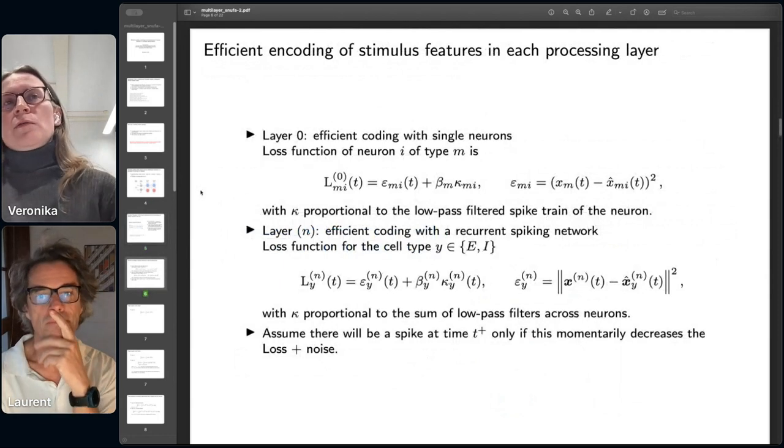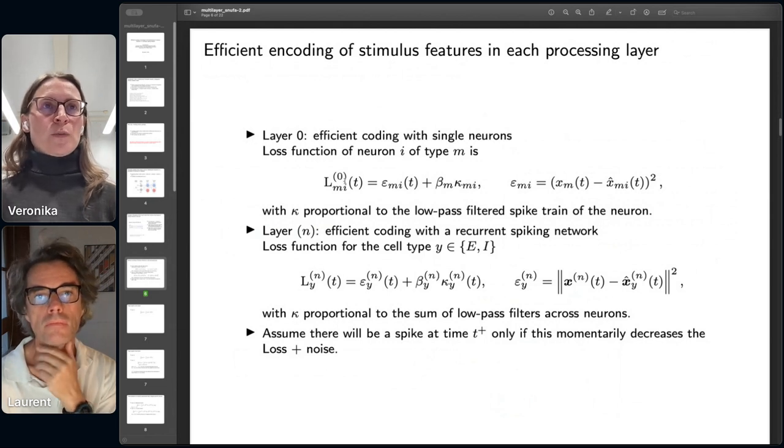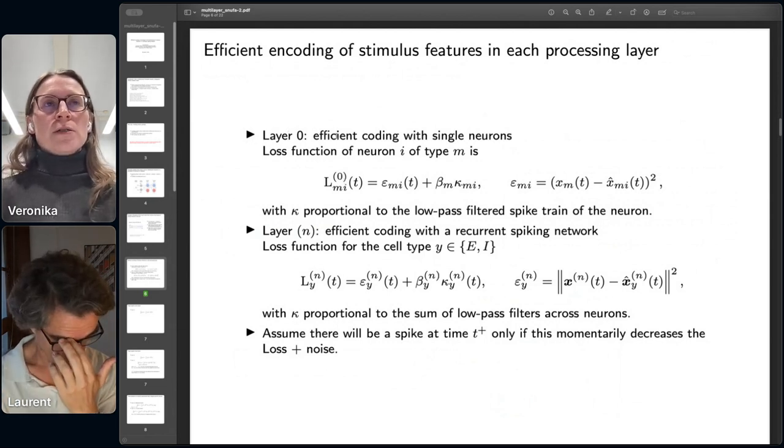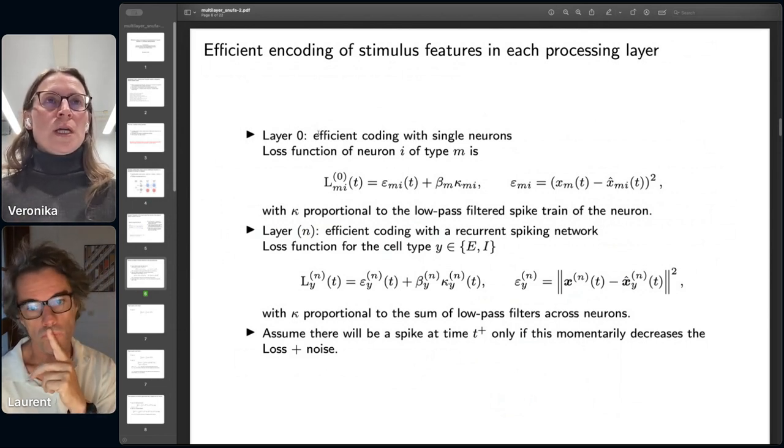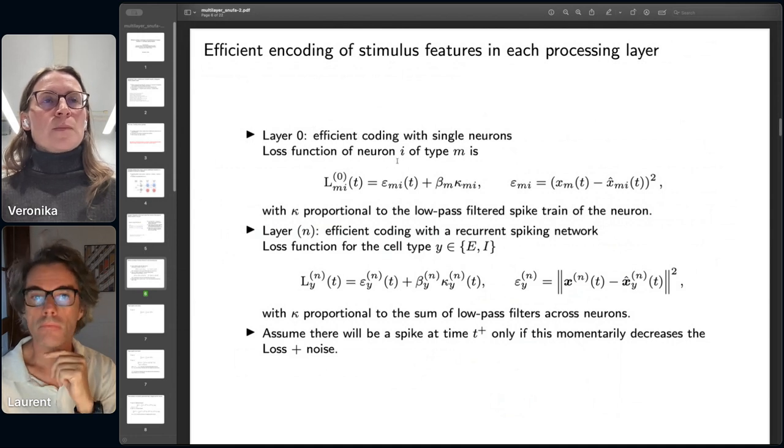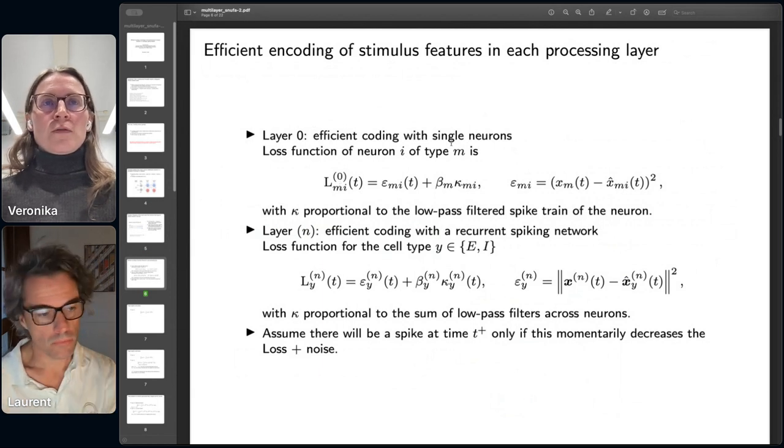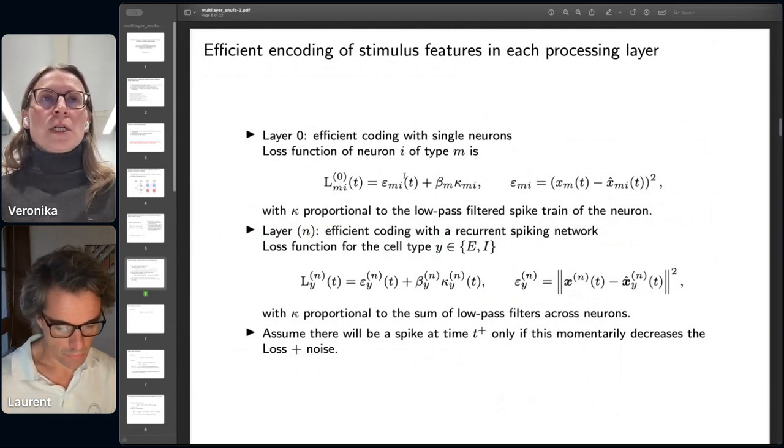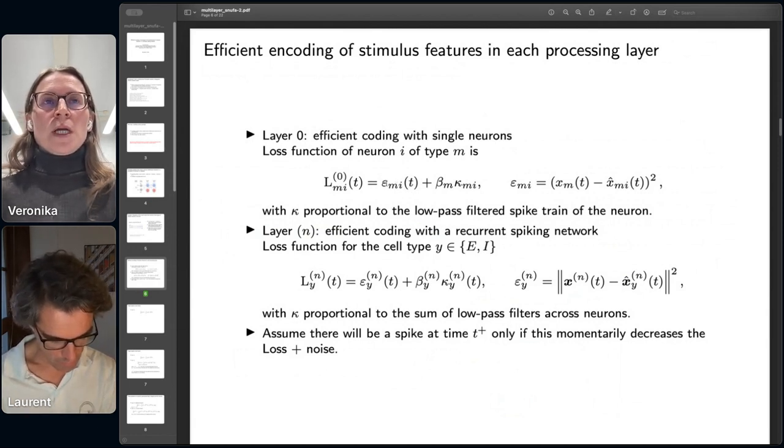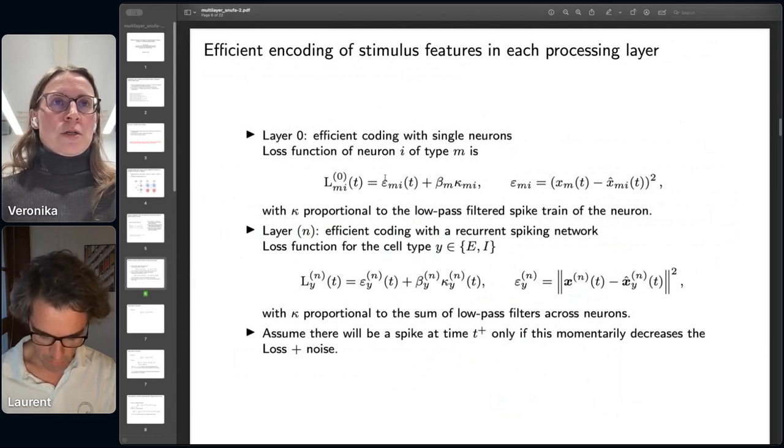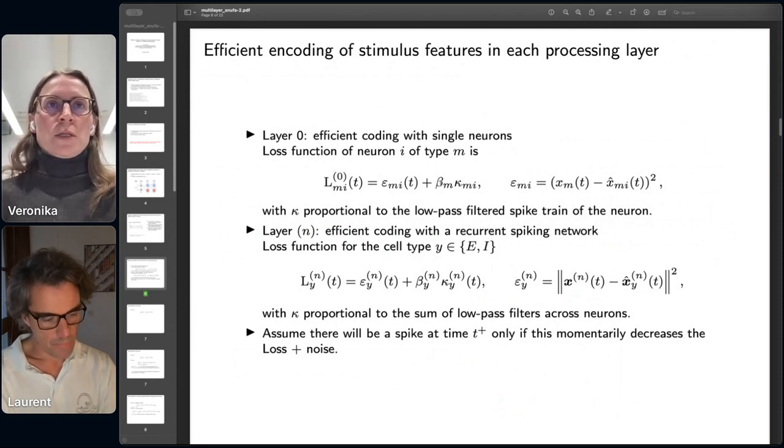We do efficient coding, and so we pose a loss function for every processing layer. In layer zero, which is the layer where sensory neurons or receptors work, we will do efficient coding with single neurons. The loss function would be relative to the activity of each single neuron of a specific type m. Our loss function looks very familiar to people who know efficient coding: we have some estimation of the encoding error and the metabolic cost of this neuron, weighted by a constant.